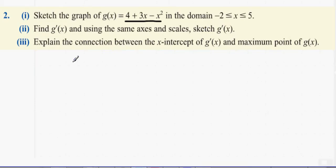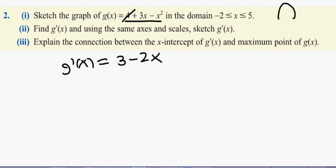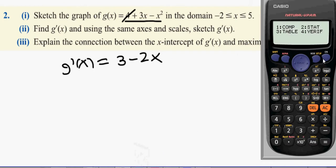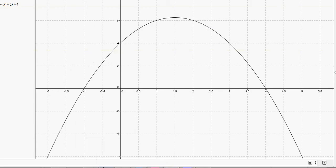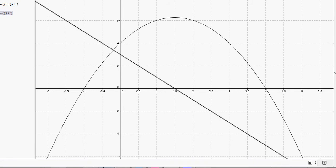We're now asked to find g'(x). The first function was an n-shaped quadratic, so the derivative will be a straight line. Differentiating 4 gives 0, differentiating 3x gives 3, and the derivative of -x² gives -2x, so g'(x) = 3 - 2x. Go to the table function in your calculator, go from -2 to 5 in steps of 1, and draw the line y = 3 - 2x.